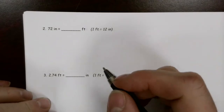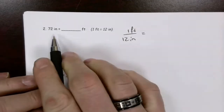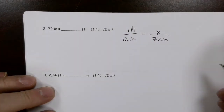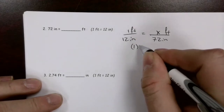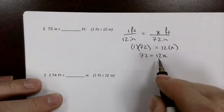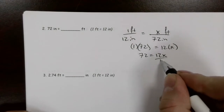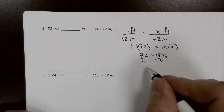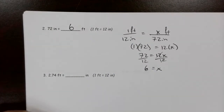So 72 inches is equal to how many feet? We know that 1 foot is the same as 12 inches. We know how many inches there are, so we're going to put 72 inches in the denominator. What we're looking for is the number of feet, so we put x feet in the numerator. Cross-multiplying: 1 times 72 equals 12 times x, so 72 equals 12x. Now I've cross-multiplied, but that wasn't enough to isolate x, so I'm going to divide both sides by 12. Those cancel, and 72 divided by 12 gives me 6. So this is 6 feet.